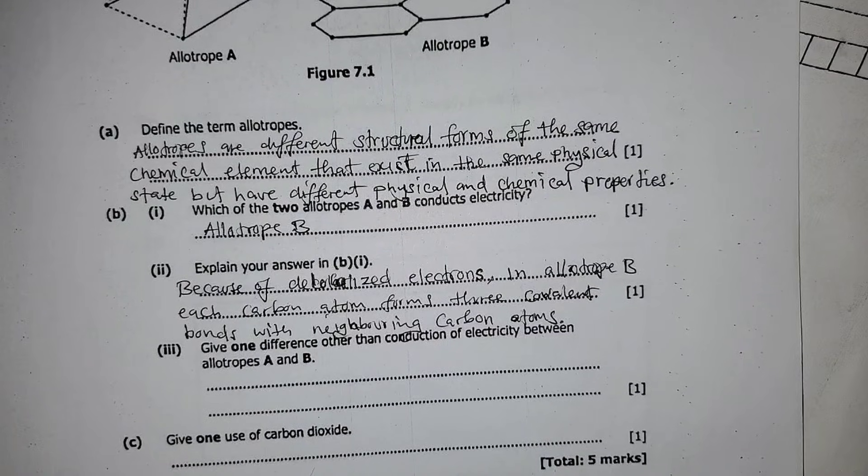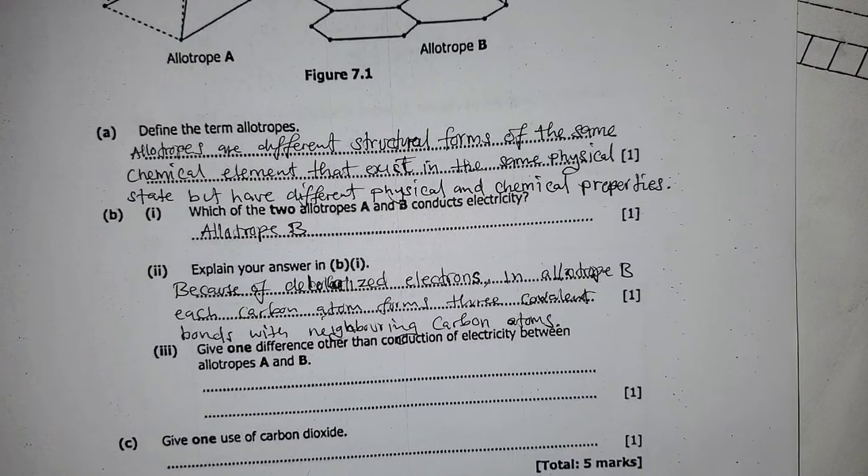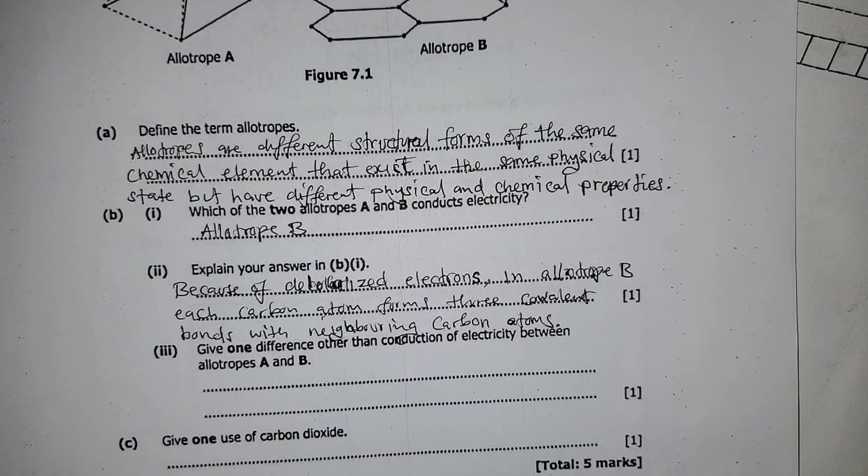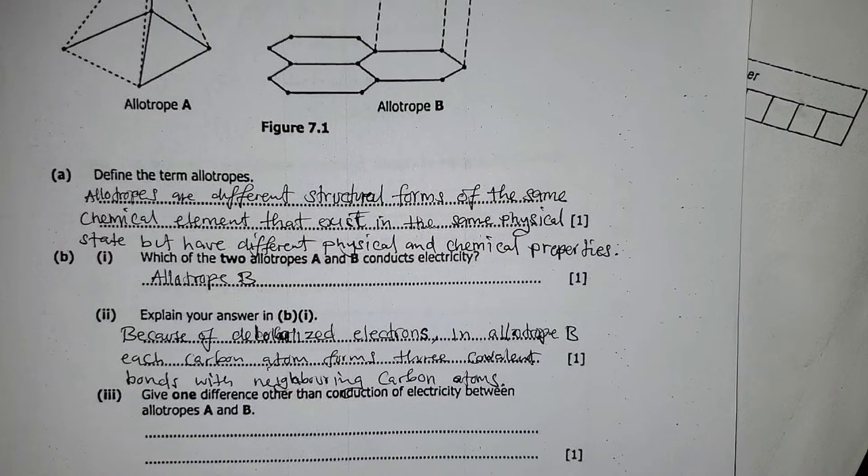Okay, let's go to question three. Give one difference other than conduction of electricity between allotrope A and B. This is very simple. Between allotrope A and B, this is very simple.